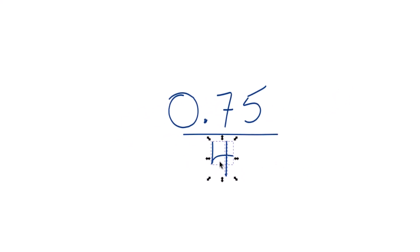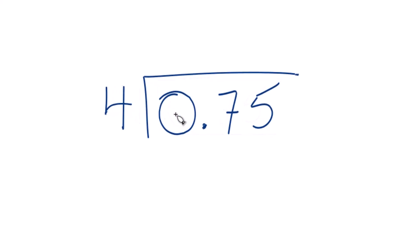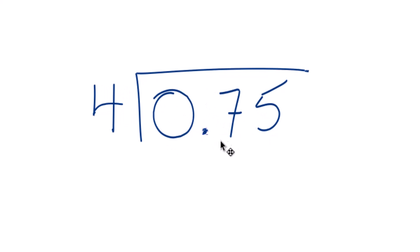But really what we want to do is we want to know how many times 4 goes into 0.75. So we'll do long division here. 4 doesn't go into 0, but we could move this decimal point over here as long as we put a 0 and a point up here. So now 4 goes into 7.